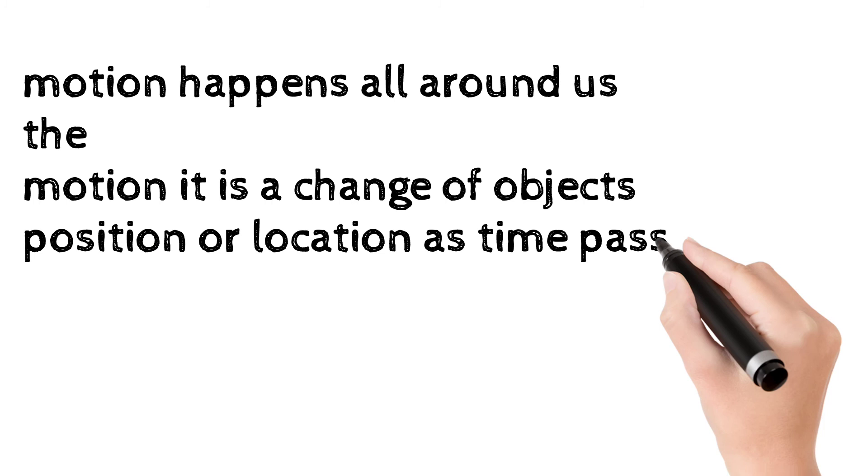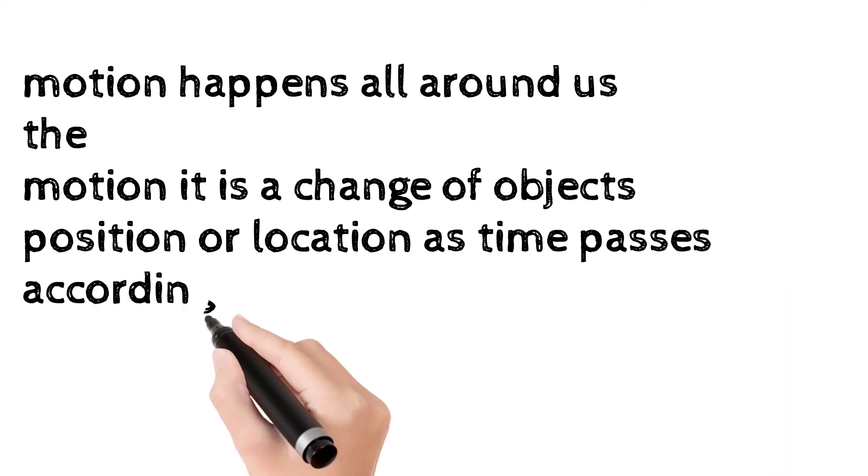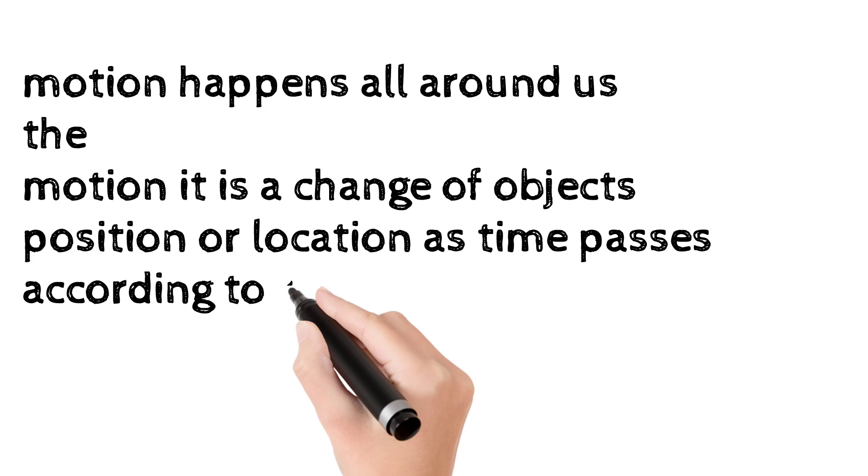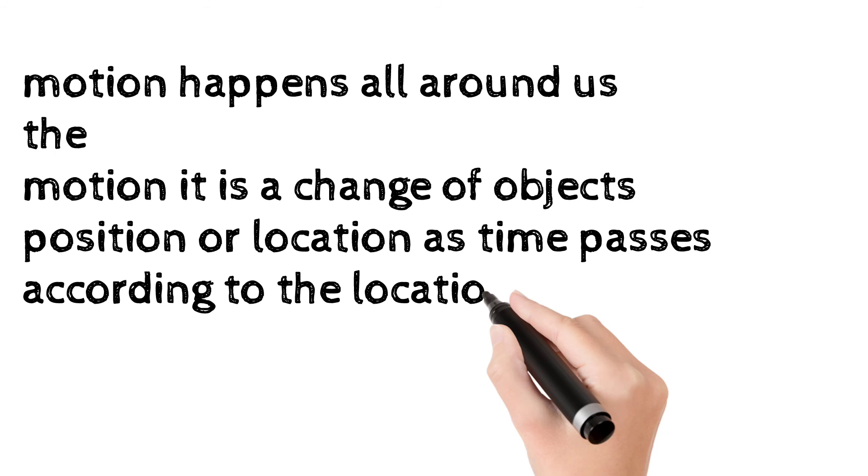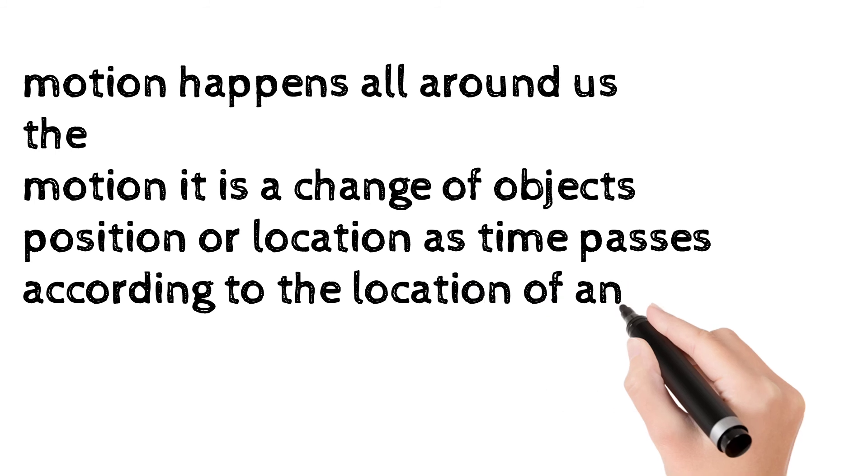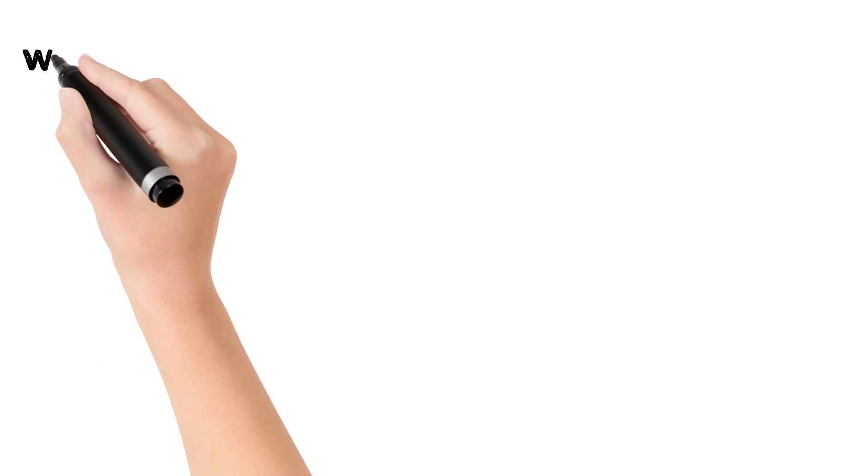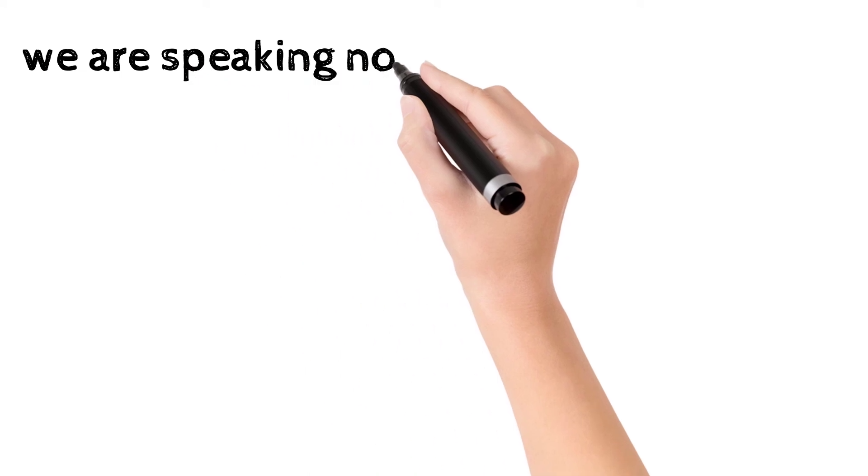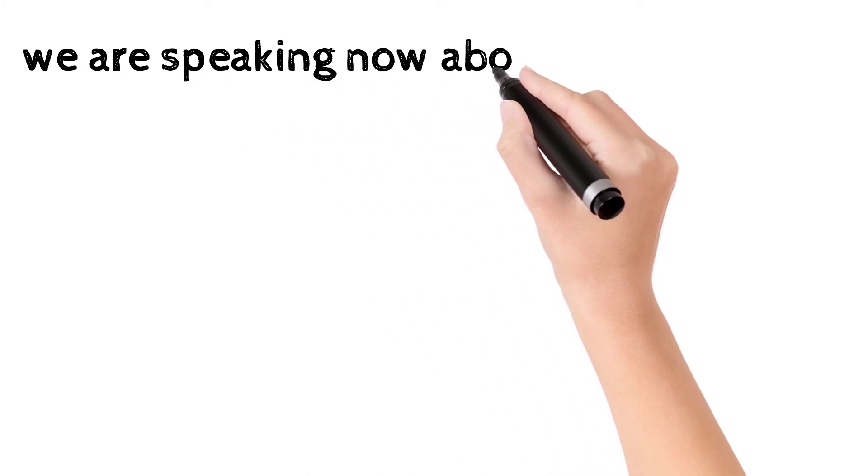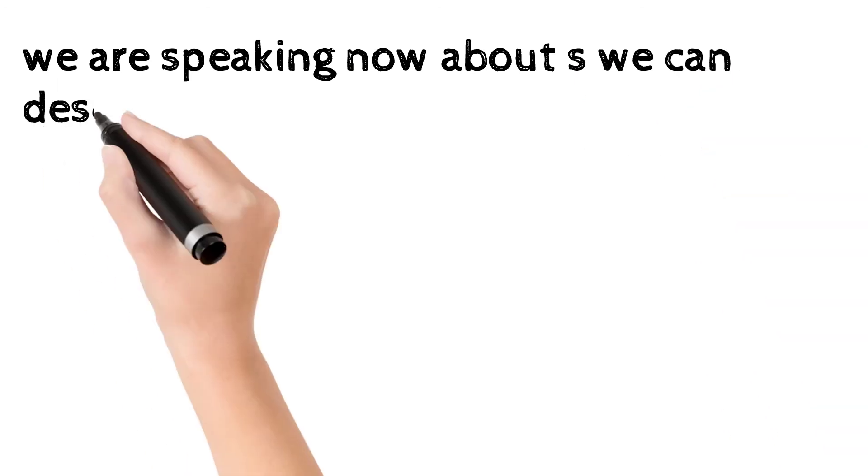We can define motion as the change of an object's position or location as time passes according to the location of another object. This means when the object's position changes as time passes according to the point of another object, we can say that the object is in a state of motion.